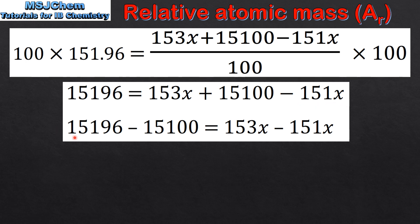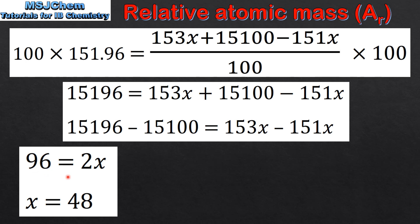We can rearrange this to 15196 minus 15100 equals 153x minus 151x. This gives us 96 equals 2x, therefore x equals 48.